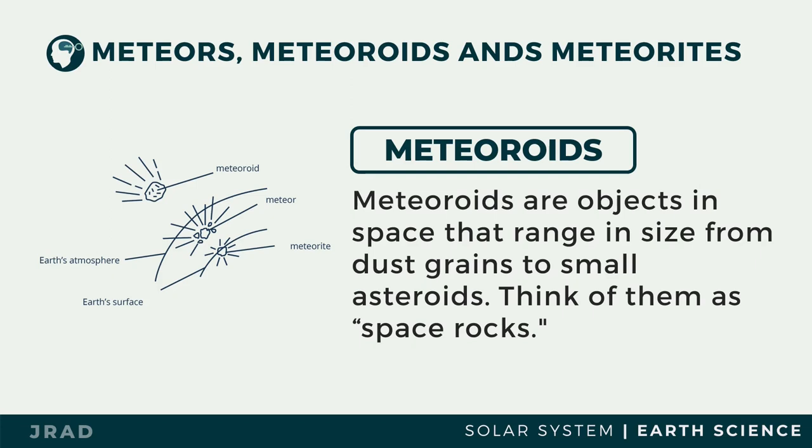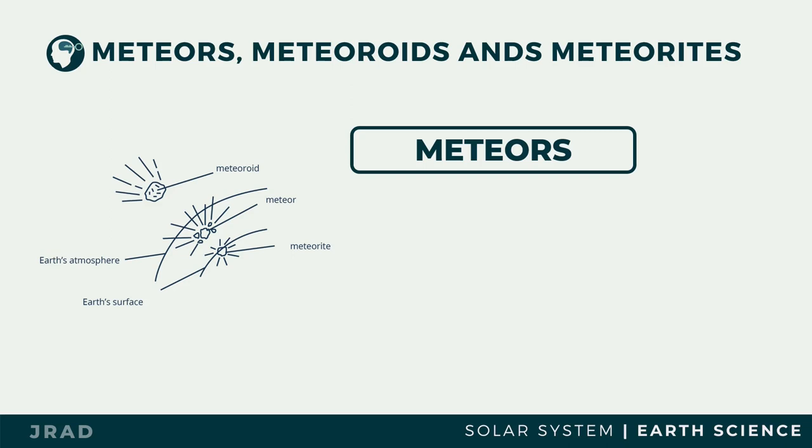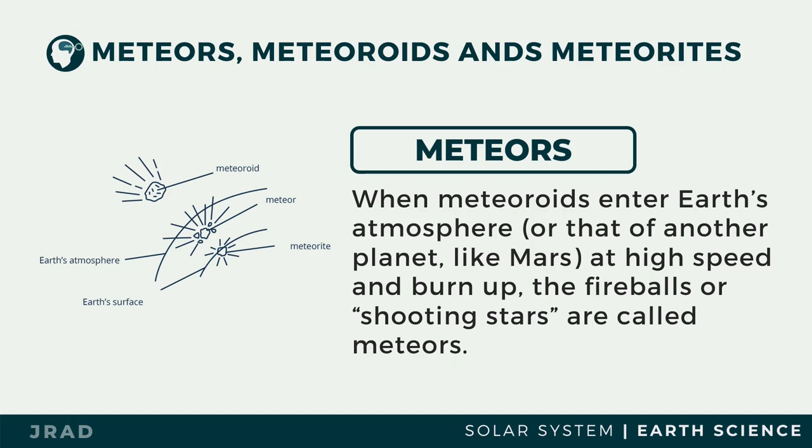Meteoroids are boulders and rocks in space. Unlike asteroids, meteoroids do not remain in a certain region; instead, they orbit around the Sun in a variety of orbits at various speeds. They also come in irregular shapes. When a meteoroid enters Earth's atmosphere, it burns up and appears like a blazing rock called a meteor. Meteors are popularly known as shooting stars or falling stars.